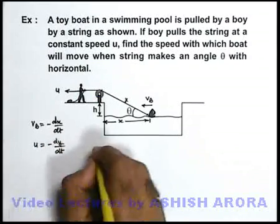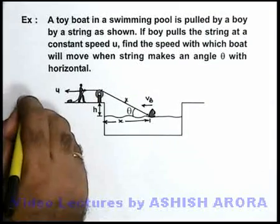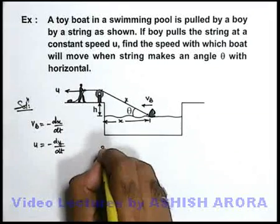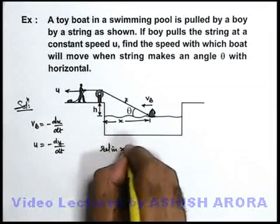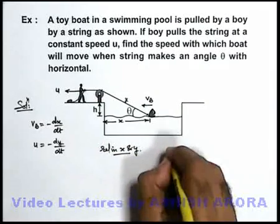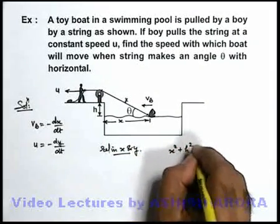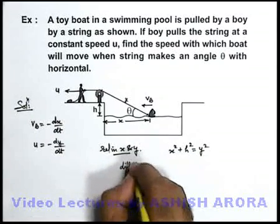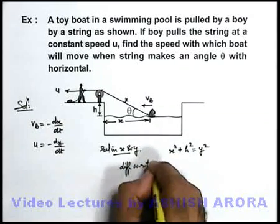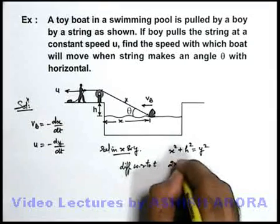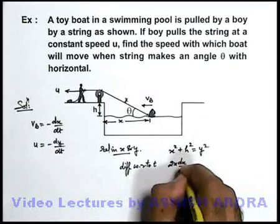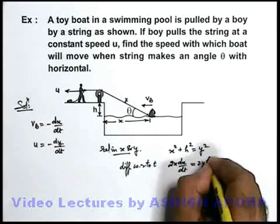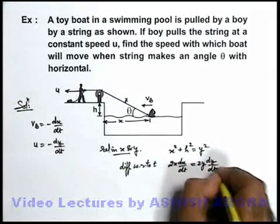In the solution, if we find out the relation between x and y, that can be very easily written as x² + h² = y². If we differentiate it with respect to time, we get 2x·(dx/dt) — the differentiation of h will be zero — equals 2y·(dy/dt).